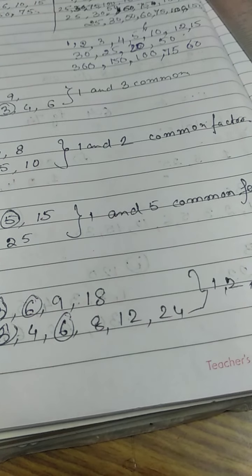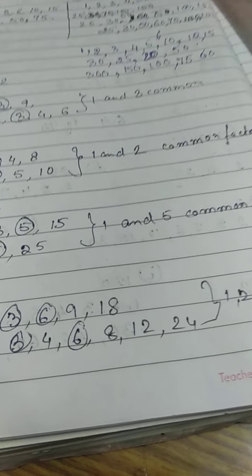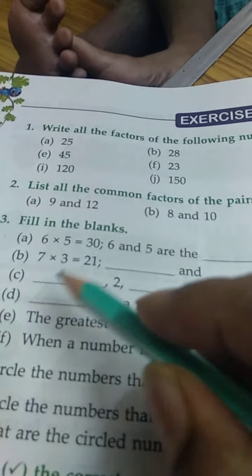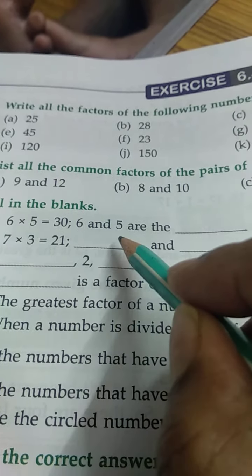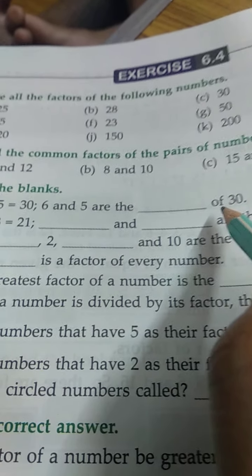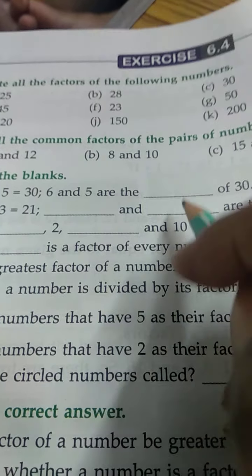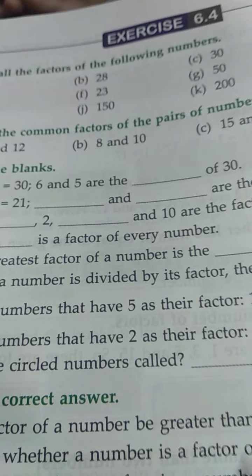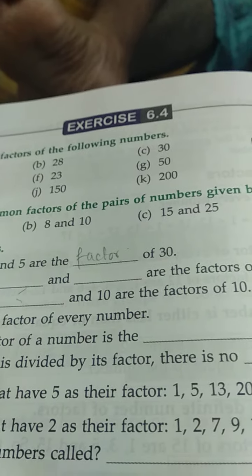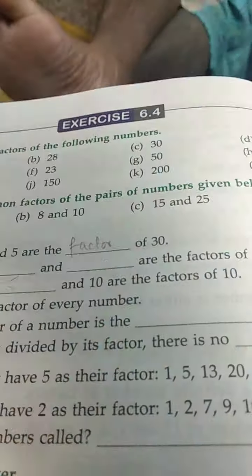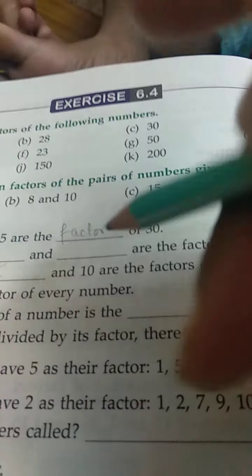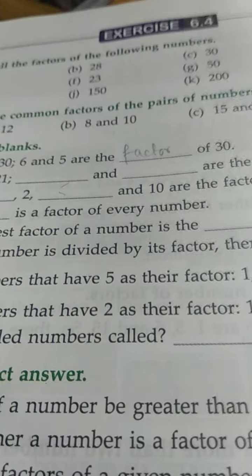So the chapter we have understood. Next, here: 6 into 5 goes to 30. 6 and 5 are the blank of 30. What is it? So what will be the answer? The answer will be factors.